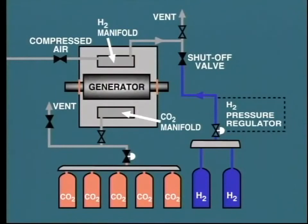Initially, the generator will be full of air. CO2 will then be admitted at the bottom manifold to push the air out of the top. When all air has been expelled, hydrogen will then be admitted from the top manifold, forcing CO2 out of the bottom.